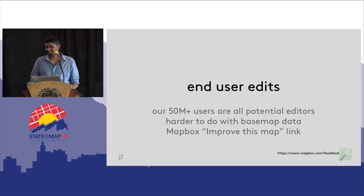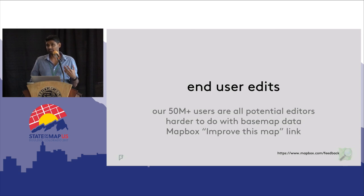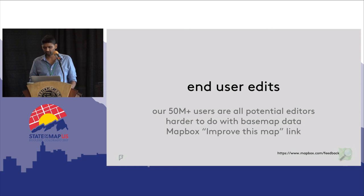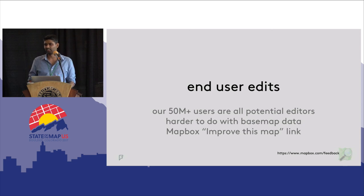Finally, what is probably the least actionable but was still felt strongly: OSM needs a better way for end users to suggest edits. We have 44,000 super users, but all of our 50 million-plus users — and in fact, hundreds of millions of users that consume our data via third-party apps using the API — are potential editors. This is admittedly harder to do with base map data, but as the 'improve this map' link on Mapbox goes to show, it's possible. Maybe it's something the foundation needs to push harder for — if you're using OSM data and rendering it on a map, make it possible for people to suggest edits somehow.